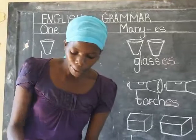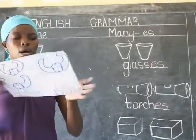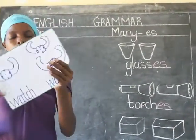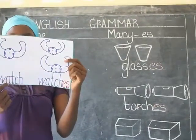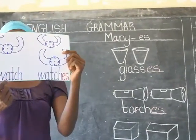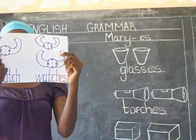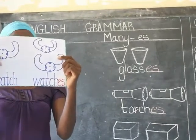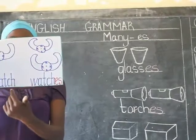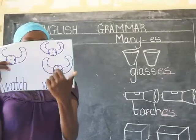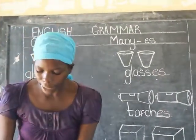Let's look at our last flashcard, which is watch. One watch, two watches. One watch, two watches. I've added E and S.